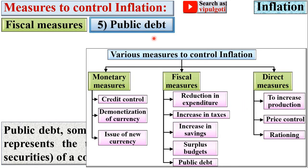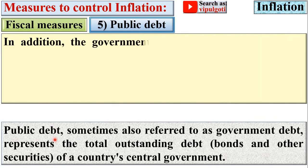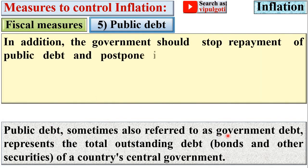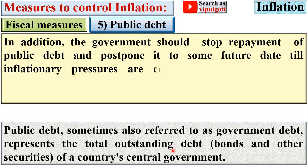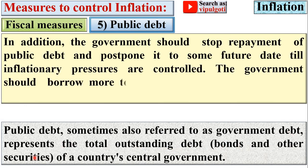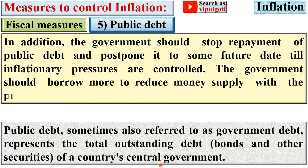Next: public debt, sometimes also referred to as government debt, which represents the total outstanding debt including bonds and other securities of a country's central government. The government should stop repayment of public debt and postpone it to a future date until inflationary pressures are controlled. The government should also borrow more to reduce money supply with the public.